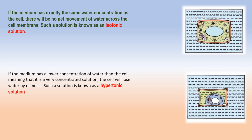If the medium has a lower concentration of water than the cell — that is, if it is a very concentrated (hypertonic) solution — the cell will lose water by osmosis. Water crosses the plasma membrane in both directions, but more water leaves the cell than enters it, and therefore the cell will shrink. In this situation, the plant cell is said to be plasmolyzed, and the animal cell (red blood cell) is said to be crenated.